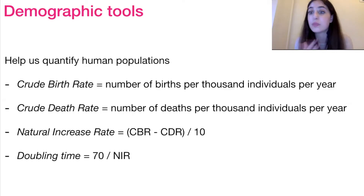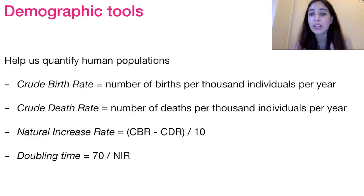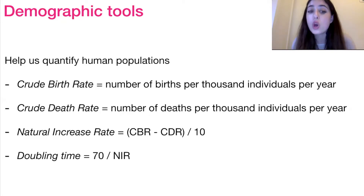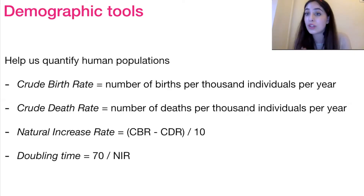The crude death rate is basically the same thing, just relating to death — the number of deaths per thousand individuals per year. The natural increase rate is the crude birth rate minus the crude death rate, divided by 10, giving you a percentage of how much the population will grow. And the doubling time is how long it would take for the population to double in size, worked out by dividing 70 by the natural increase rate.